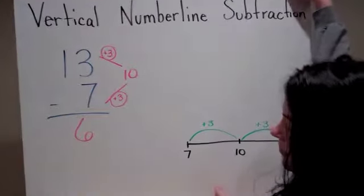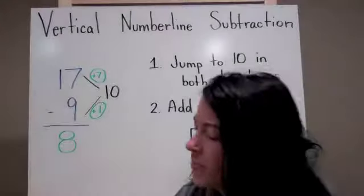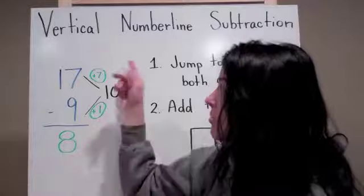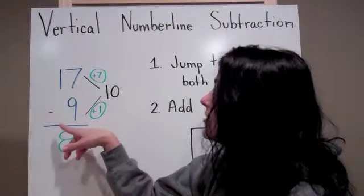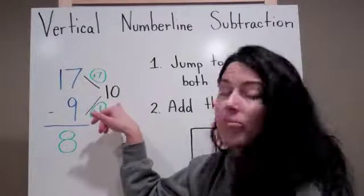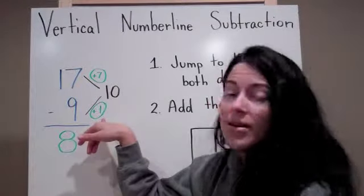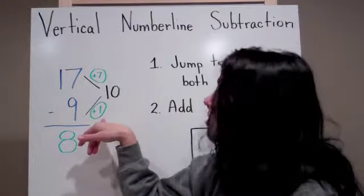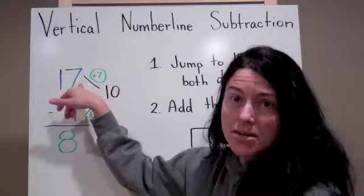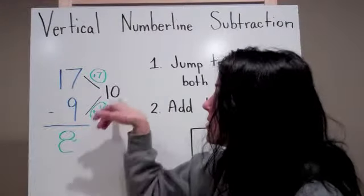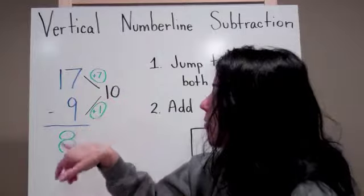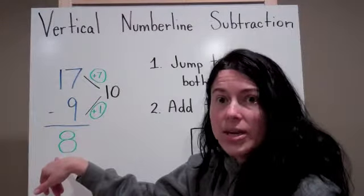Let's try another one. Here's our next problem: 17 minus 9. So I'm going to jump to my landmark number, which is 10. 9 to 10 is a space of 1, 10 to 17 is a space of 7. So I know that I have 7 and 1, which gives me a difference of 8.